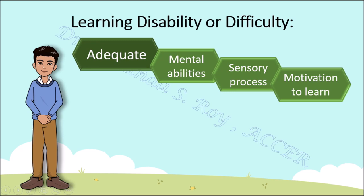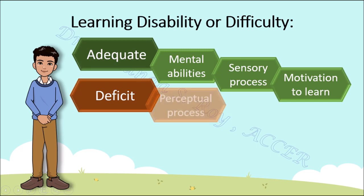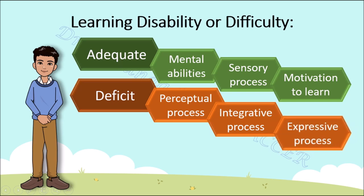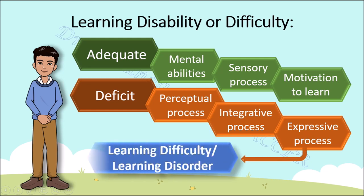So what are the difficulties in learning? There is a deficit or a problem in perceptual processing, which means he makes errors while giving meaning to information obtained from his senses. This is especially seen while identifying letters or numbers. Integrative processing of information — which is organizing words or numbers — is also affected, resulting in him finding it very difficult to express himself. All these result in children like Ishan having what is known as learning difficulty or learning disabilities.